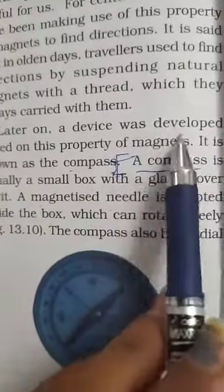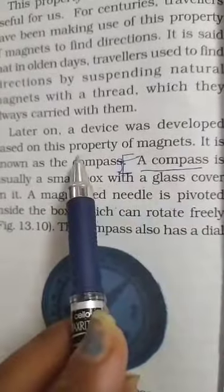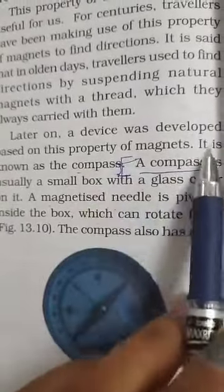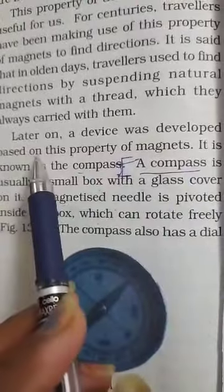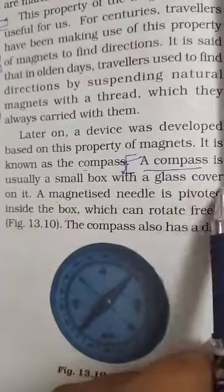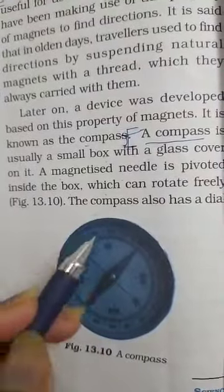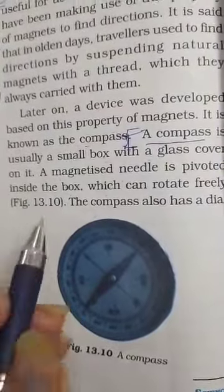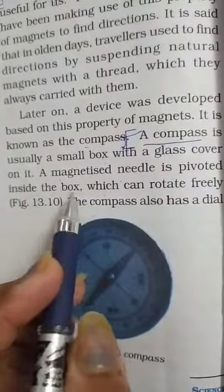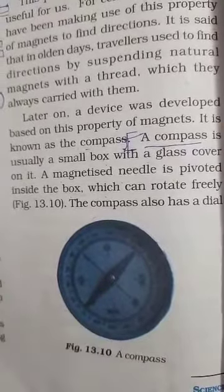Later on, a device was developed based on this property. A compass is usually a small box with a glass cover on it. You can see this compass. The magnetized needle is pivoted inside the box. There is a magnetized needle which can rotate freely. The compass also has a dial with directions marked on it.